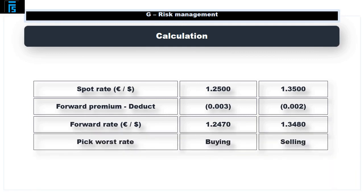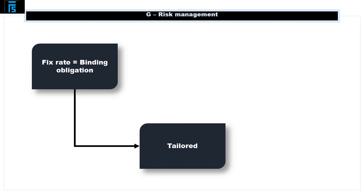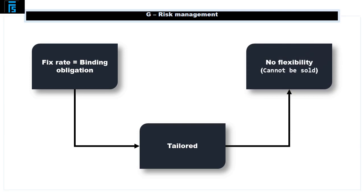Again, pick the worst rate for you. If I'm selling euros I'll divide by 1.3480 to work out how many dollars I'll receive, and if I'm buying euros I'll divide by 1.2470 to work out how many dollars I'll need to pay. Forward contracts fix the rate for us, but they are a binding obligation and therefore unavoidable if, for example, our customer defaults. They are tailored to us as a named party in the contract, so they offer no flexibility and the contract can't be sold on.